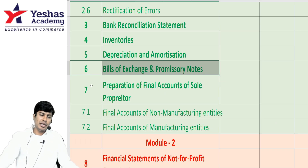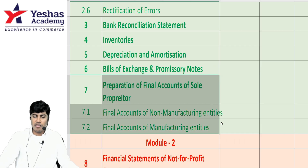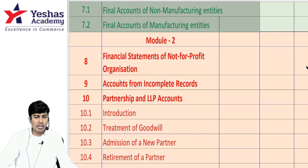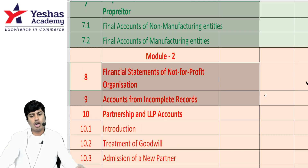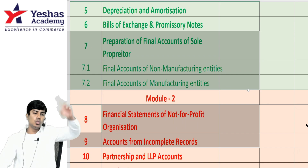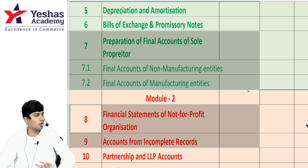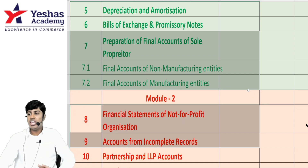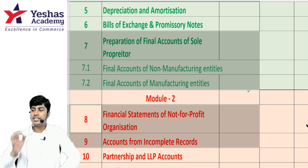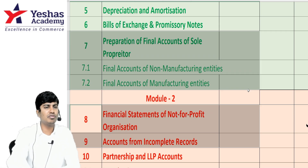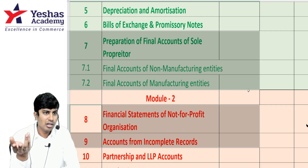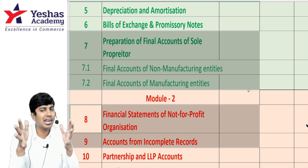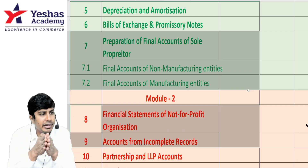Preparation of sole proprietorship, non-manufacturing, and manufacturing entities along with financial statements of NPOs and incomplete records are all like-minded chapters. Don't do selective learning — don't say you will do two out of three or one out of three. If you're skipping, skip all three; if you're doing, do all three. They go hand in hand — you just have to get the feel of it.